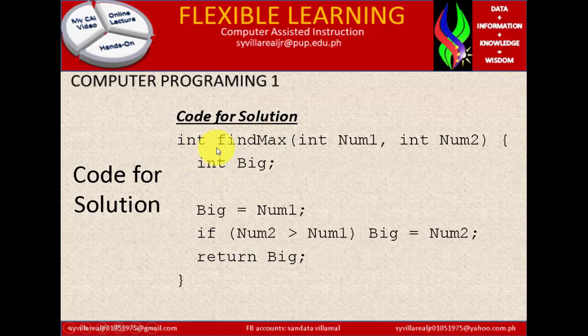Code for solution. Int integer findmax. We have the function findmax in finding the largest or big number. Integer num1, integer num2. So we have two variables. They are both integer. Now we have integer big and big is equals to num1. So big is considered to be 17. If num2 is greater than num1, then big is equals to num2. Then we have 53.